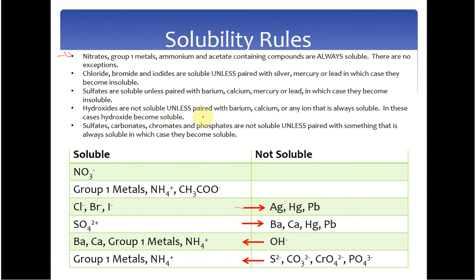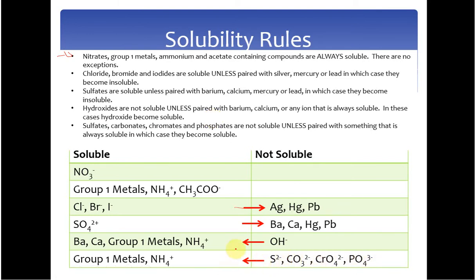Group 1 metals and ammonium can also force sulfates, carbonates, chromates, and phosphates to be soluble. So sulfates, carbonates, chromates, and phosphates are always insoluble unless they're paired with group 1 metals or ammonium, which forces them to the soluble side. Keep in mind your textbook will give you more rules — sometimes as many as 25 — and will mention things like being marginally or slightly soluble. For our purposes this semester, we are going to say it is either soluble or it's not.